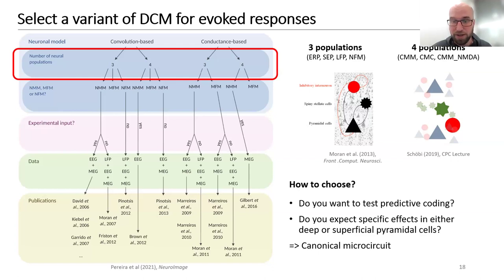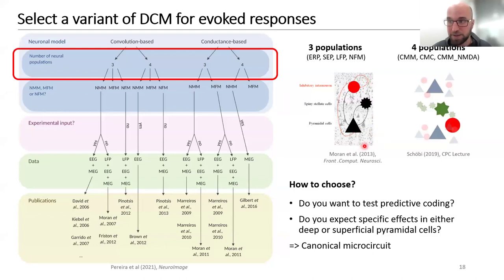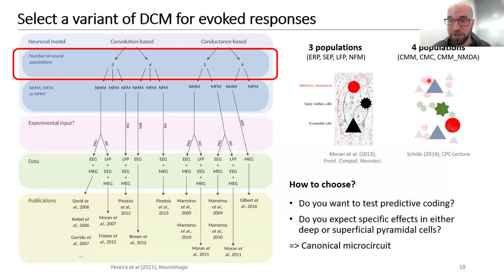The next choice is how many neuronal populations to model — currently three or four in SPM. The three-population ERP model includes pyramidal cells, spiny stellate cells, and inhibitory interneurons, where pyramidal cells are assumed to be in both superficial and deep layers. Because predictive coding theories link deep and superficial cells differently, the canonical microcircuit model separates pyramidal cells into deep and superficial populations.